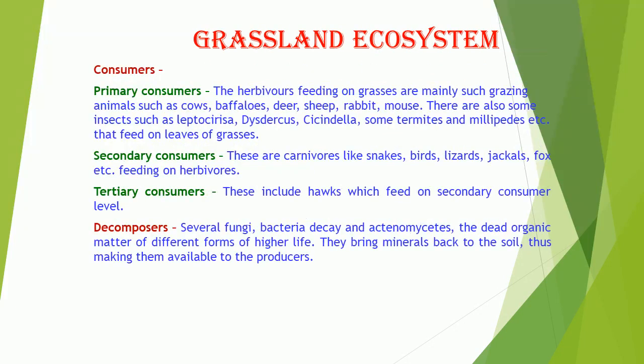Primary Consumers: The herbivores feeding on grasses are mainly grazing animals such as cows, buffaloes, deer, sheep, rabbit, and mouse. There are also some insects such as Leptocorisa, Dytiscus, Cicindela, some termites, and millipedes, etc., that feed on leaves of grasses.